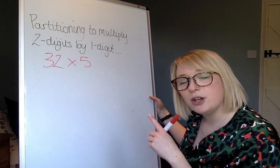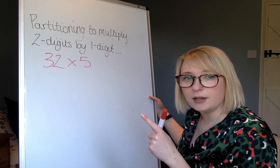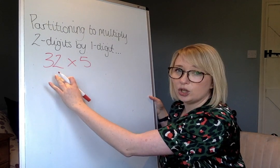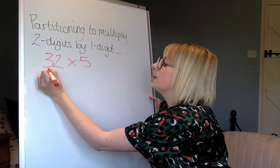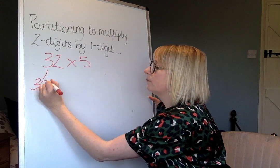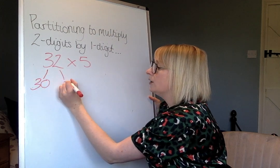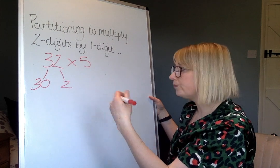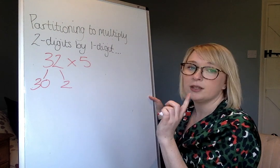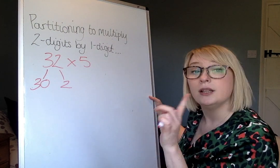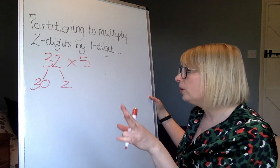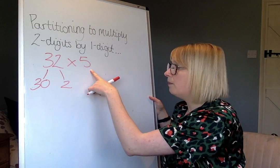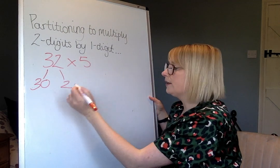You start by looking at the two-digit number and making sure you know what that number is made up of. So 32 can be partitioned into 30 and 2 — it is made up of tens and ones, 30 and 2. So step one: partition the number.